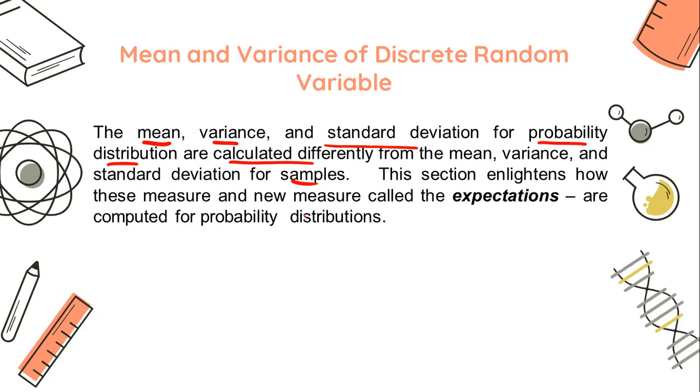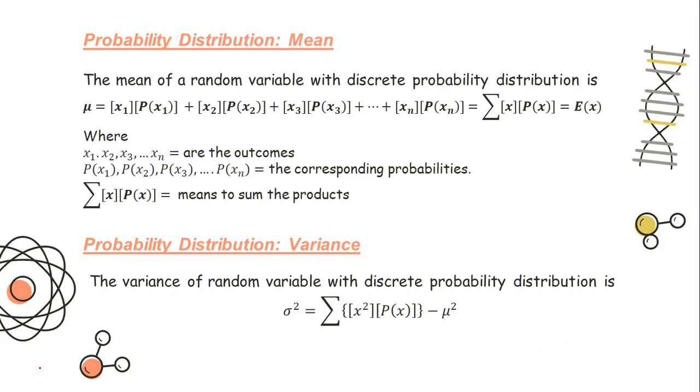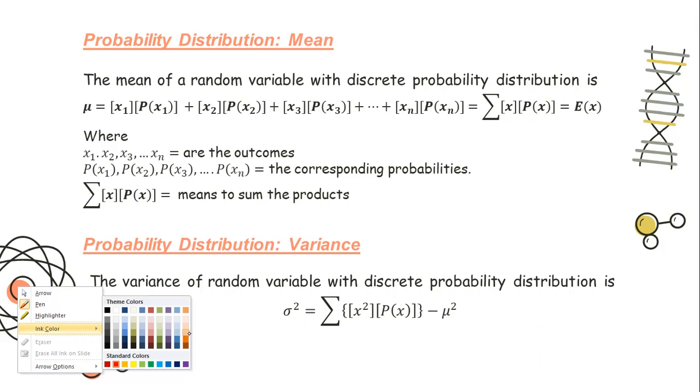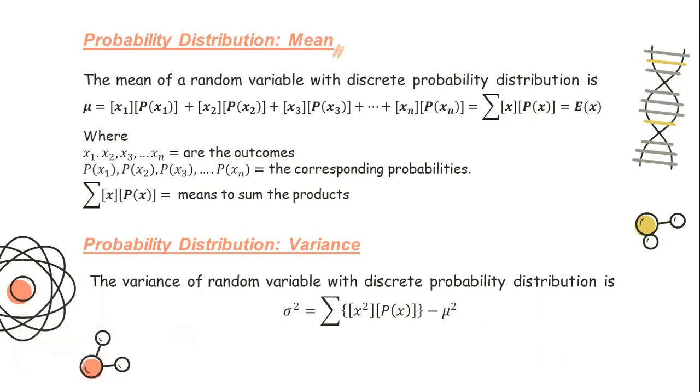The first one is the mean. The mean of a random variable with discrete probability distribution is symbolized by mu, a Greek symbol. For us to get the mean, we are going to get the product of the outcome and its corresponding probability. After we get all the products of the outcome and its corresponding probability, we are going to add them together.